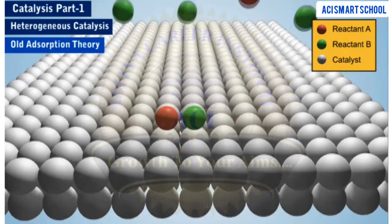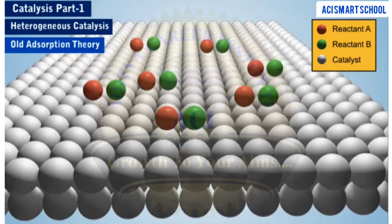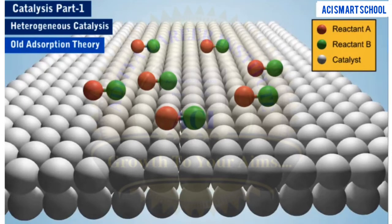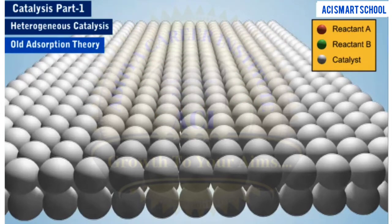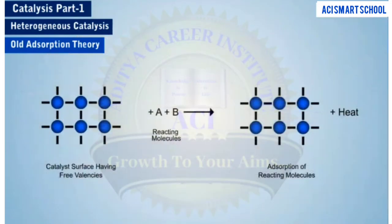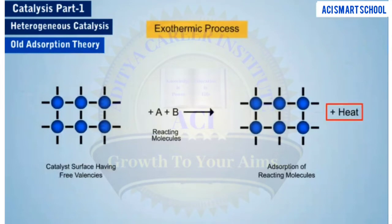This results in an increase in the concentration of the reactant molecules on the surface of the catalyst. As a result, the rate of reaction increases. The relative ease with which the product is separated from the surface of the catalyst helps a continuous chemical process to be initiated. Also, as adsorption is an exothermic process, the heat involved in the reaction helps to speed it up.